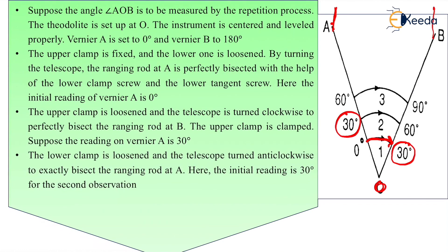This 30 degrees should be the initial reading of set two. To fix the angle, we again clamp the upper clamp screw — upper clamp screw is tight, lower is loose — and rotate the telescope clockwise to again bisect the ranging rod at A. The reading on the vernier is now 30 degrees. We then loosen the upper clamp screw, tighten the lower, and rotate clockwise to bisect ranging rod at B to get an angle of 60 degrees.